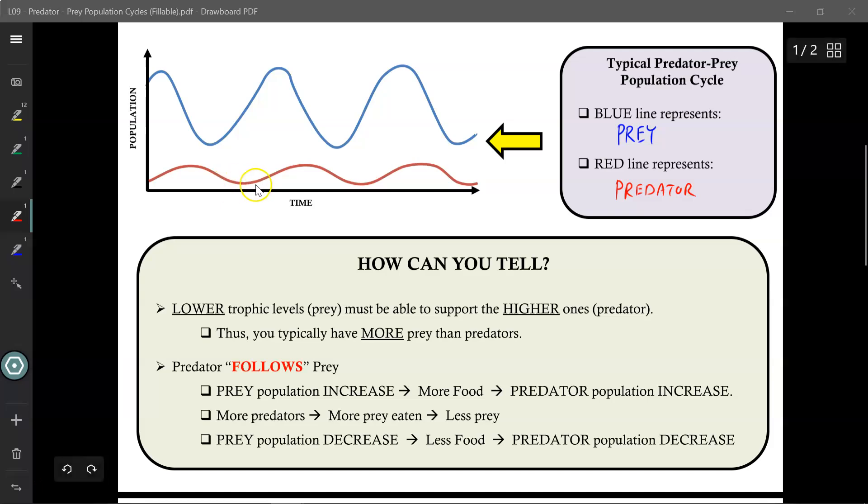Now we have very few predators—not a lot of wolves in the area. If there's not a lot of wolves hunting the deer, the deer can increase their population. But again, once there's a lot of deer, a lot of food for the wolves, the wolf population can also increase. And then the cycle starts anew.